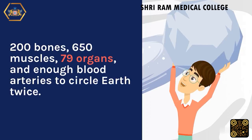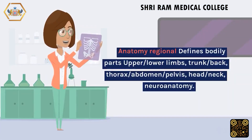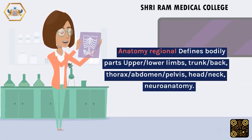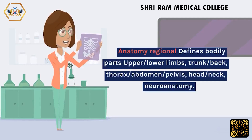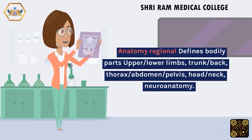The body has enough blood arteries to circle the earth twice. Regional anatomy defines bodily parts: upper and lower limbs, trunk and back, thorax, abdomen, pelvis, head and neck, and neuroanatomy.